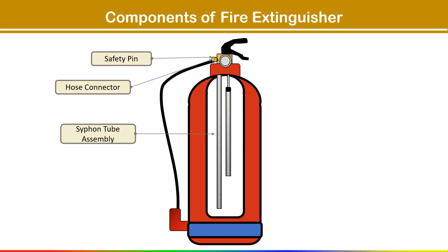The next component is the siphon tube assembly. This tube assembly is used to deliver a liquid agent from a portable fire extinguisher in the event of a fire. The assembly is comprised of a rubber tube, wire mesh, strainer, ferrule, and a stainless steel lock wire.